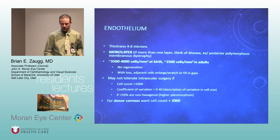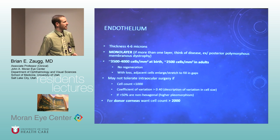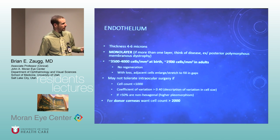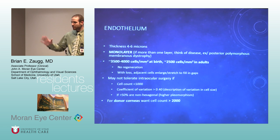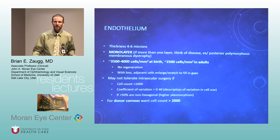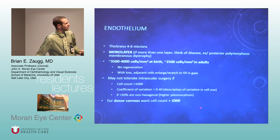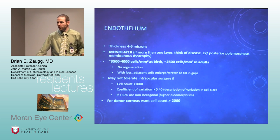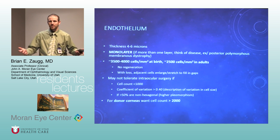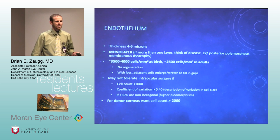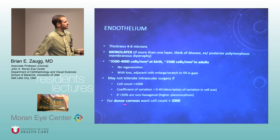The endothelium is 4 to 6 microns thick — just a monolayer of cells. At birth you have about 3,500 to 4,000 cells, and in adults about 2,500. When doing transplants, donor corneas come in at about 2,500 to 3,000 cells. For cataract surgery, a cell count around 1,000 gives risk for corneal edema. For donor corneas, we definitely want above 2,000 cells.